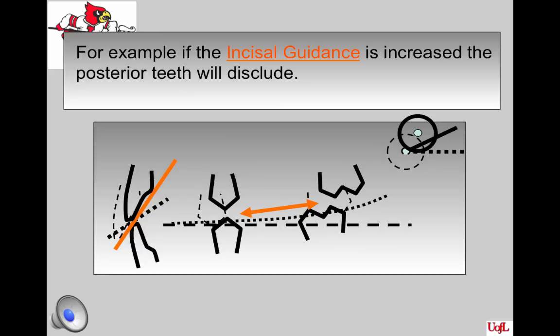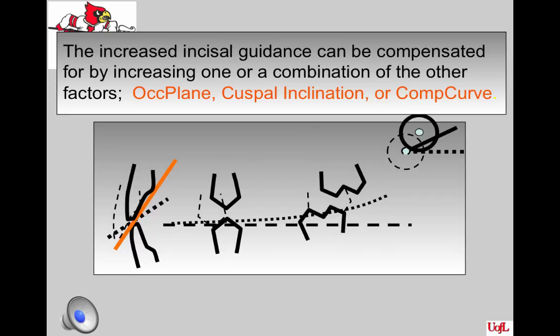The placement of anterior teeth is governed by aesthetics and phonetics. If we need to change the position of the anterior teeth, we must alter other factors in Thielmann's formula to compensate. We try to keep incisal guidance to a minimum in complete denture occlusion to avoid discluding and tipping the dentures. The increased incisal guidance can be compensated for by increasing one or a combination of the other factors on the lower part of Thielmann's formula: you can increase the occlusal plane, cuspal inclination, or compensating curve.